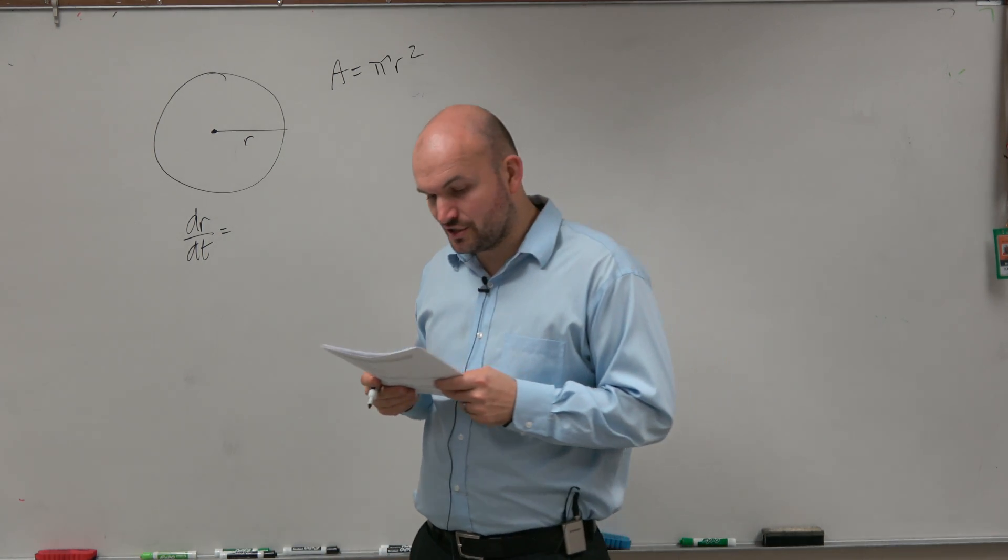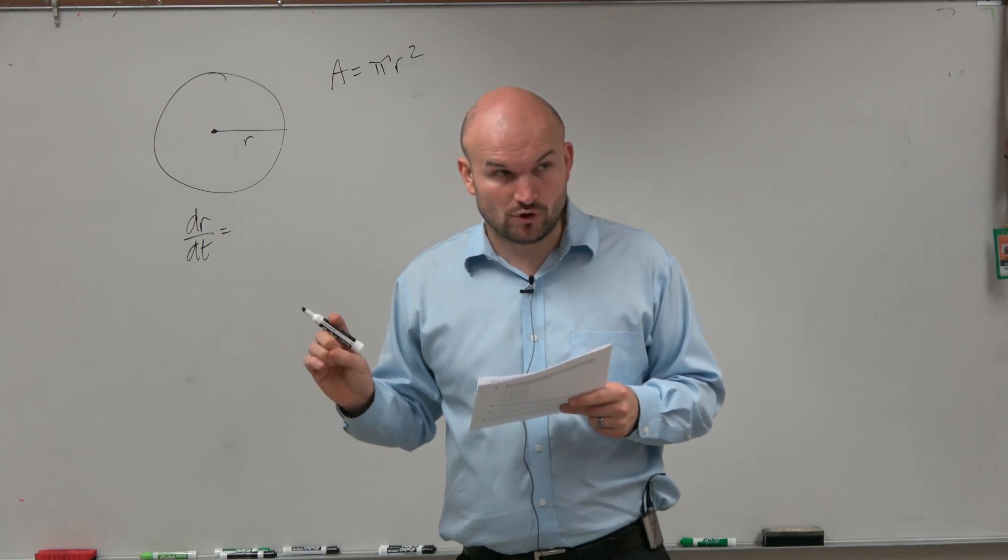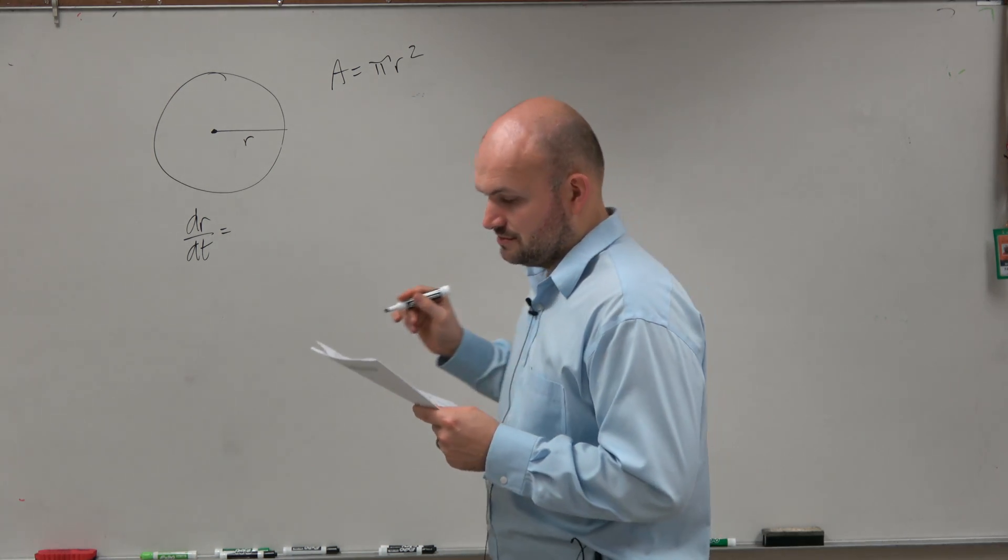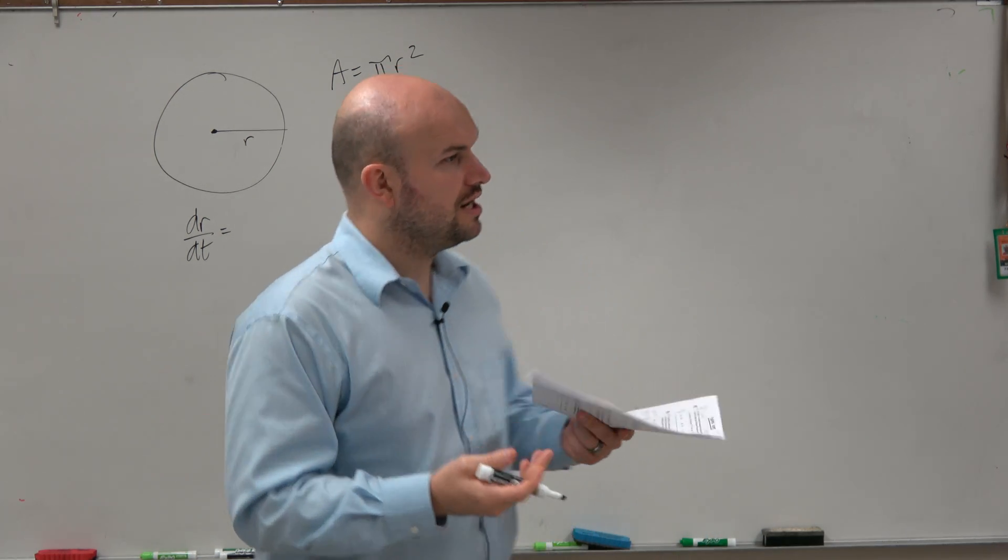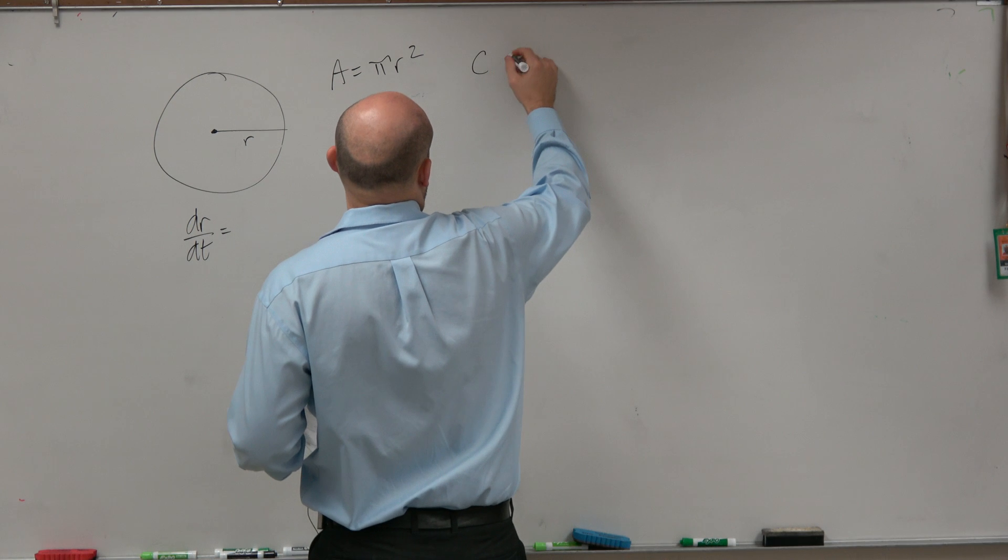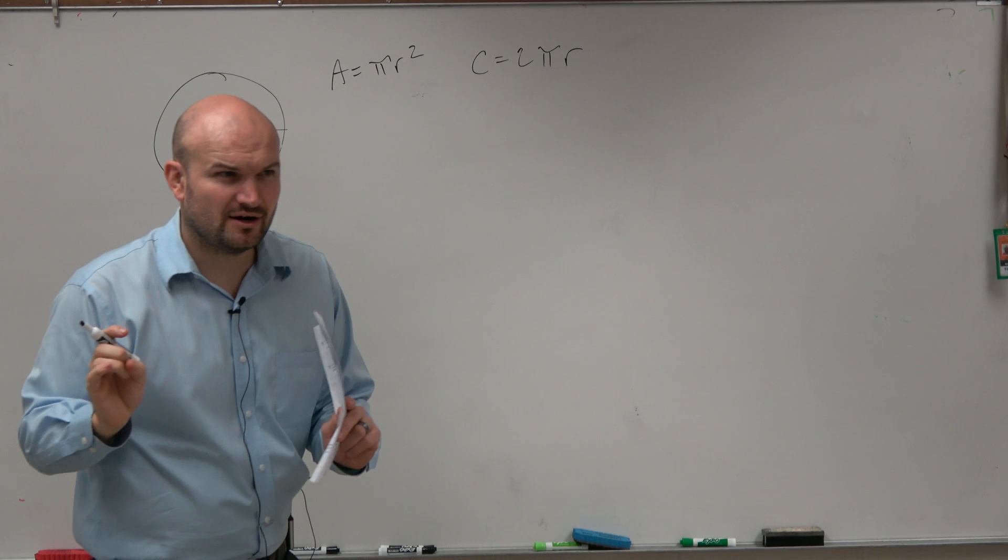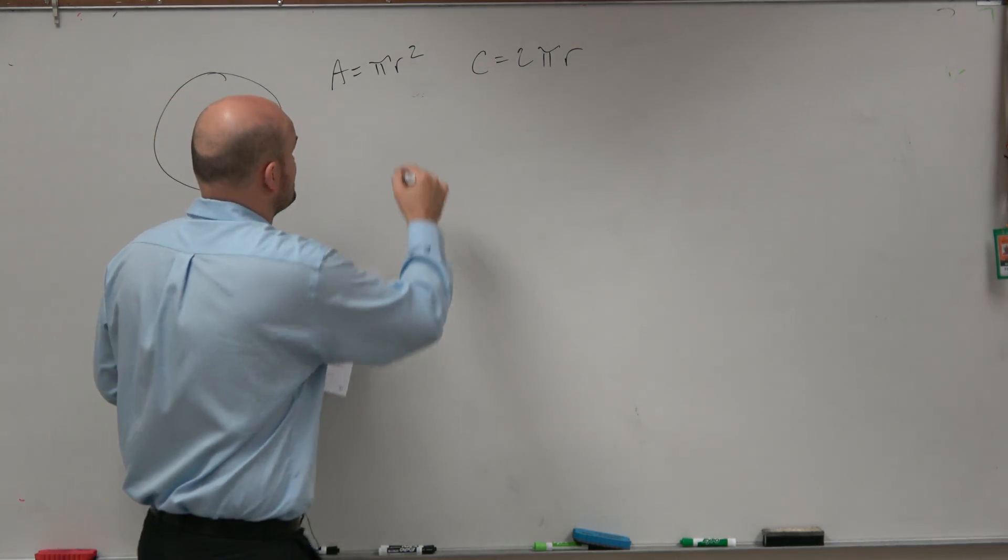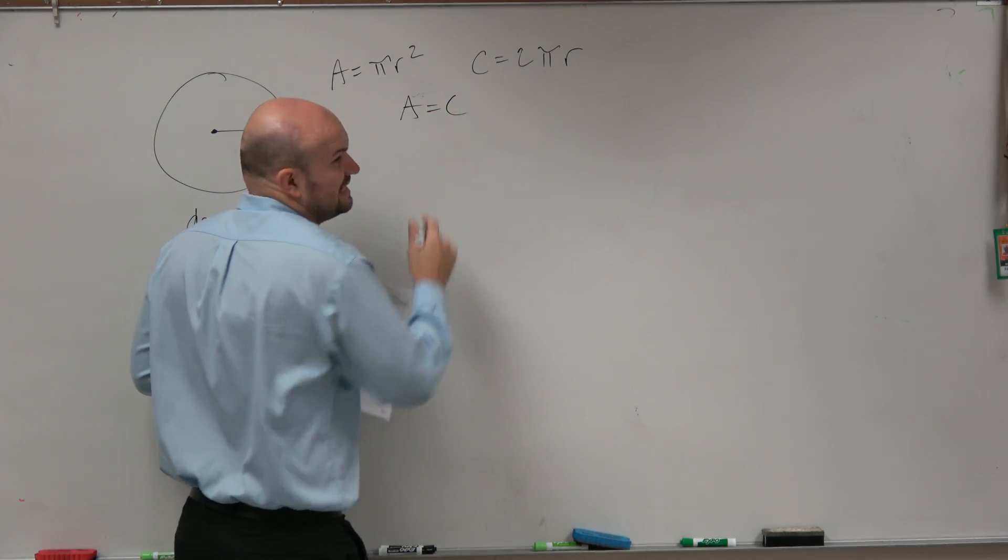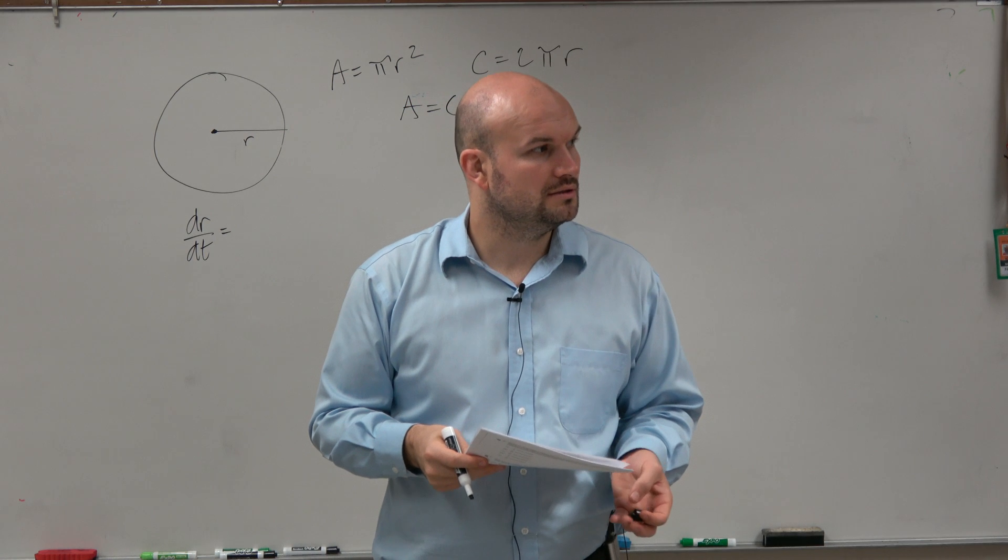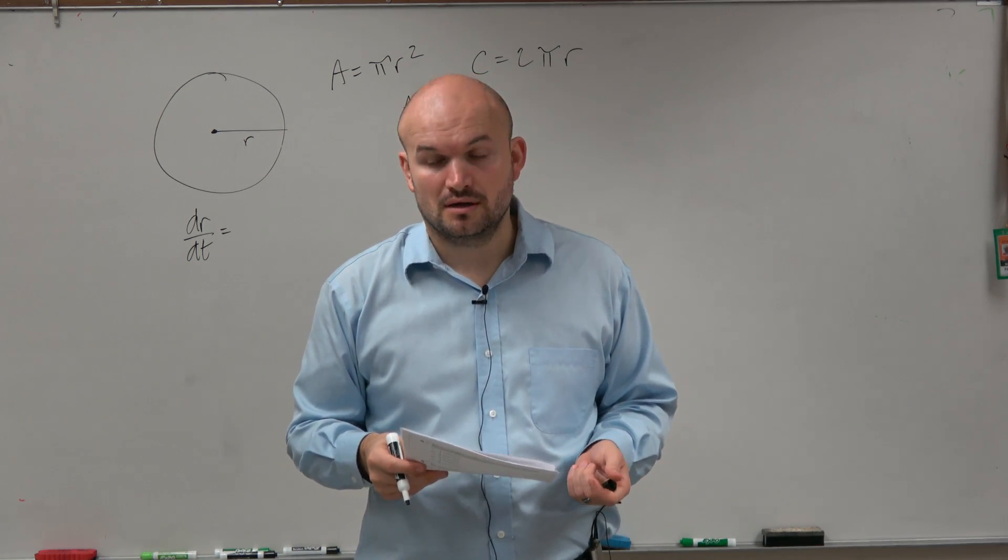Rate of increase in the circle is numerically equal to the increase of the circumference. OK, circumference. Circumference equals 2 pi r. Now, what did they say they are equal? They are numerically equal. That means A is equal to C.